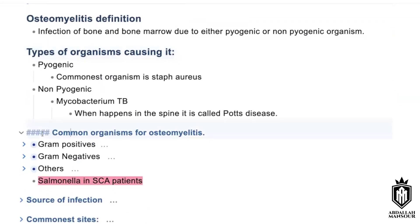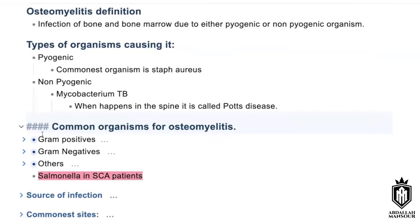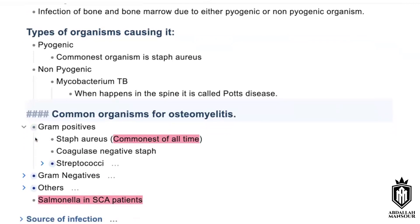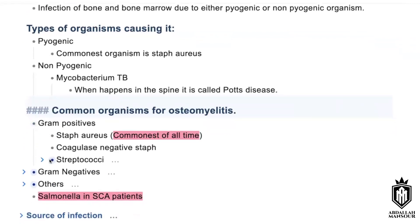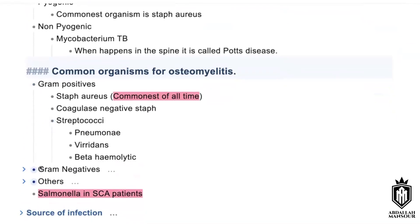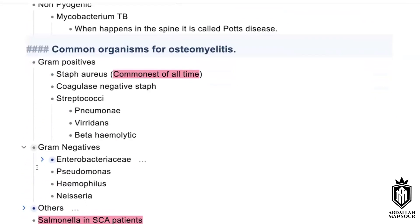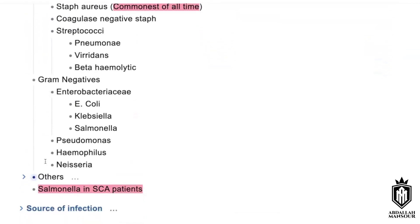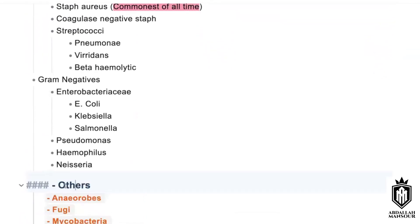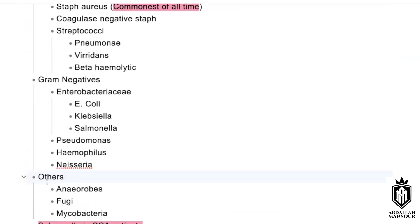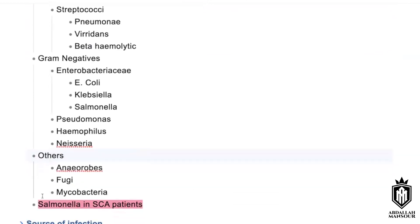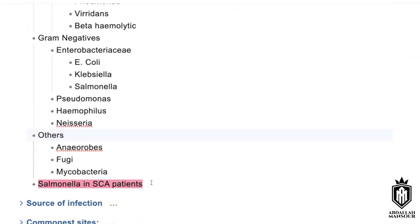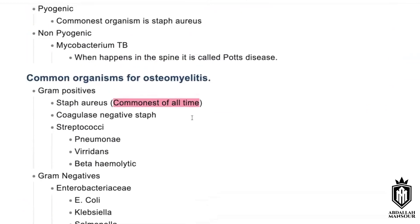You can classify organisms differently: gram-positive — includes Staph and Strep; gram-negative — includes Enterobacteriaceae and Pseudomonas; others — anaerobes and fungi; and Salmonella in sickle cell anaemia patients.